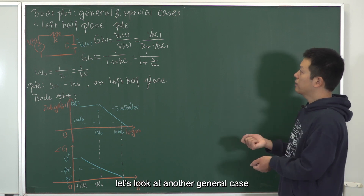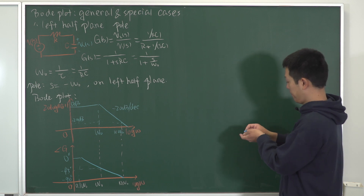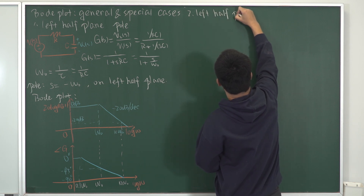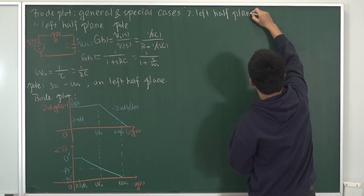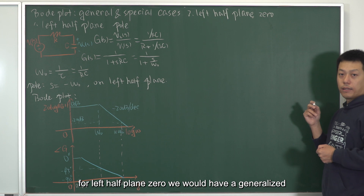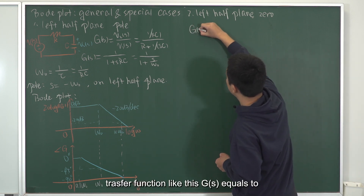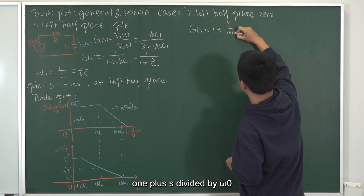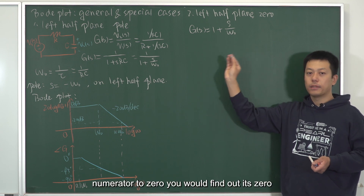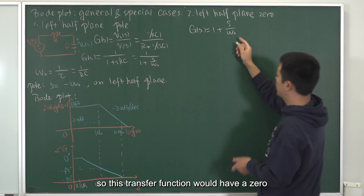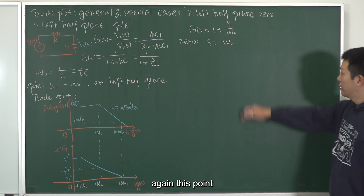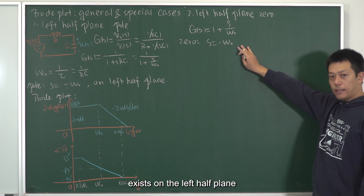Next, let's look at another general case: the left half-plane zero. For a left half-plane zero, we have a generalized transfer function G(s) equals 1 plus S divided by omega_0. For this transfer function, if you set the numerator to zero, you find the zero is at S equals minus omega_0.